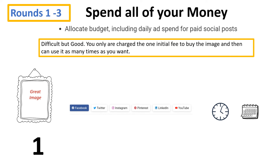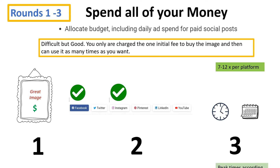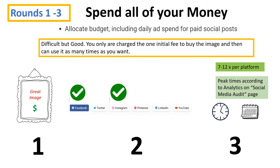First, decide on your image. You will see free images, but I recommend buying obvious professional images when you can. Second, choose your platforms, likely spending most of your resources on Facebook and Instagram. Schedule your campaigns at peak times of highest engagement. You will be prompted to spend all of your money — don't go crazy and over-post on any particular platform, as this will create ad fatigue. If you have more money to spend, go back and consider a better picture, not more posts.